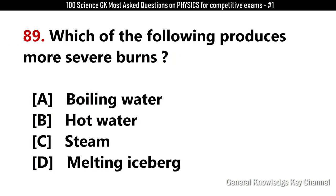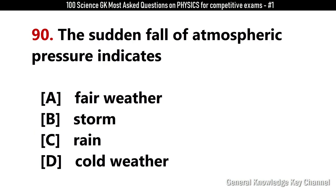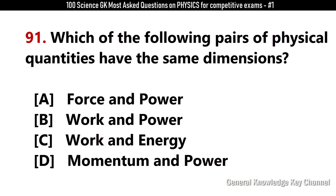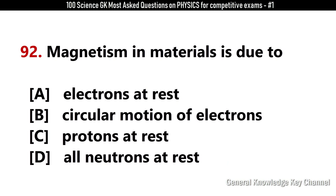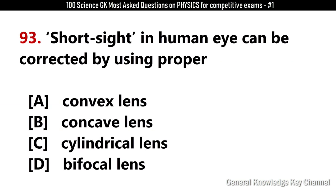Which of the following produces more severe burns? Answer C: Steam. The sudden fall of atmospheric pressure indicates? Answer B: Storm. Which of the following pairs of physical quantities have the same dimensions? Answer C: Work and energy. Magnetism in materials is due to? Answer B: Circular motion of electrons. Short sight in the human eye can be corrected by using a proper? Answer C: Concave lens.